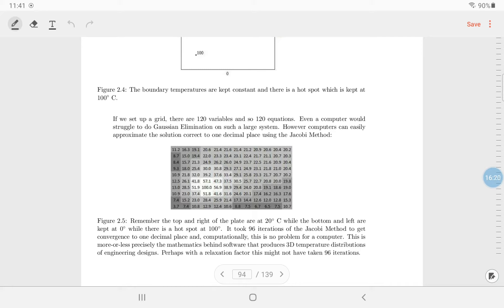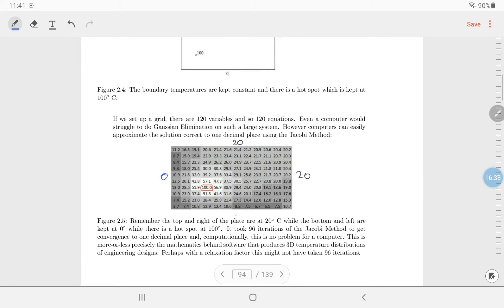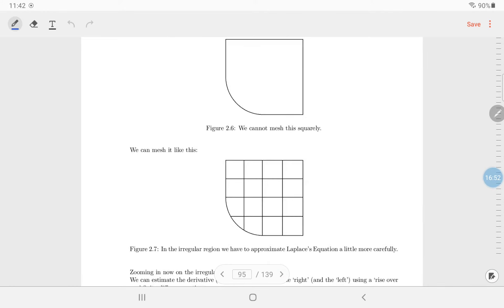So maybe the top and right of the plate are 20. We'll just finish this off. I've got a hotspot of a hundred. And then the bottom and left are at zero. Now it took 96 iterations of the Jacobi method to get convergence to one decimal place and computationally, this is no problem for a computer. It mightn't have taken so long if I used to, yeah, we're not doing the relaxation factor.